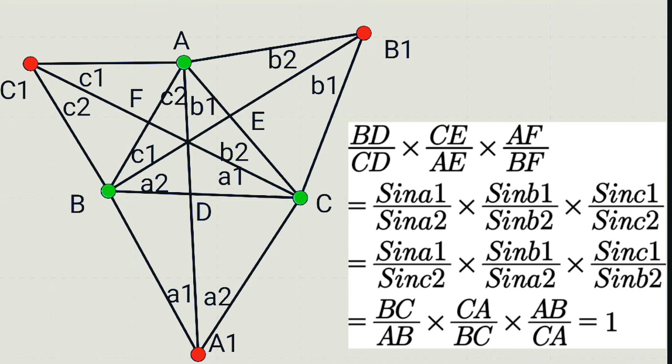Now make a slight change and rewrite this product as: sine(a1)/sine(c2) × sine(b1)/sine(a2) × sine(c1)/sine(b2). Now consider the angle pairs A1 and C2.